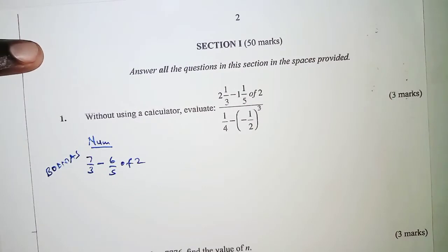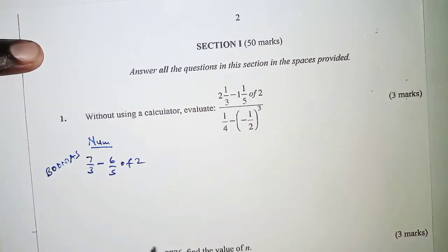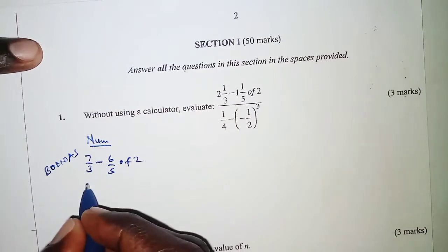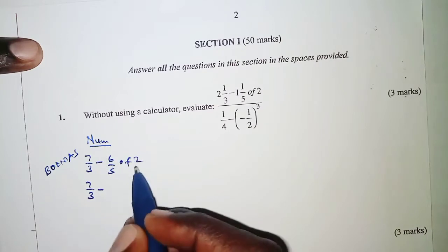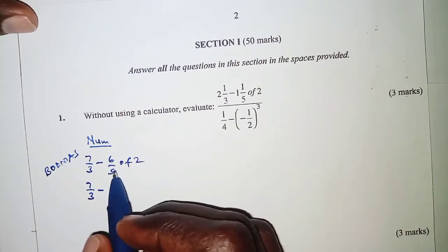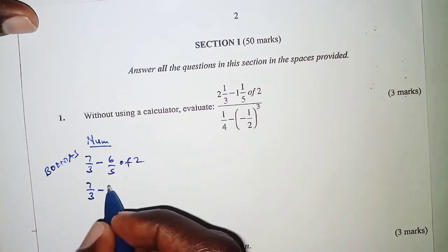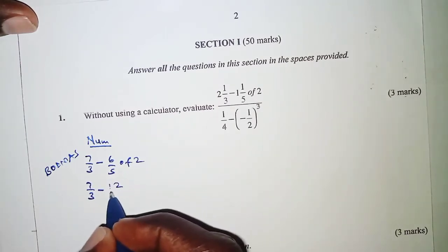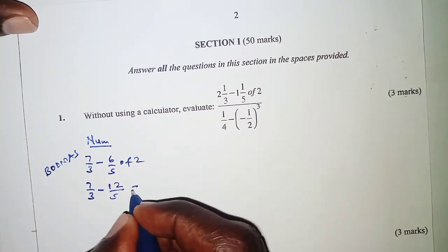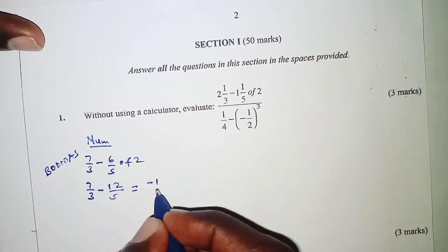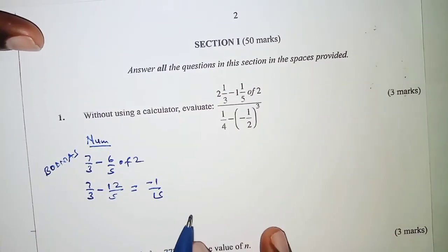In this case, 'of' comes first in the order of operations, so we have 7 over 3 minus, and then we carry out this operation: negative 6 over 5 of 2, and that is minus 12 over 5. When we work that out we should get negative 1 over 15. That is the numerator.